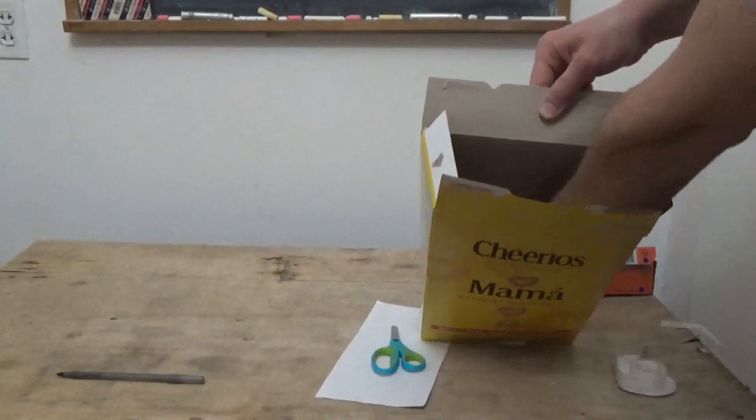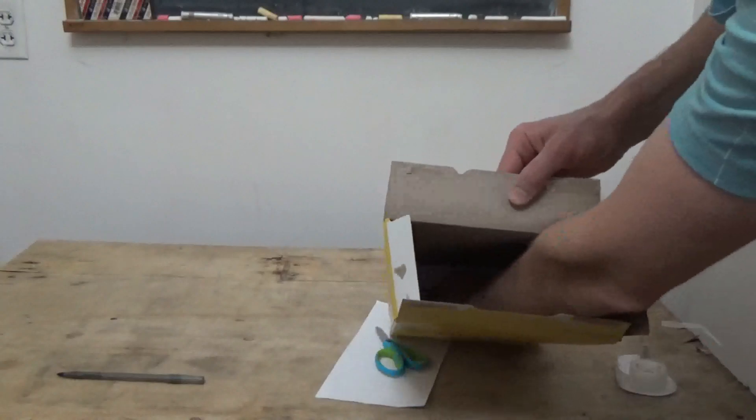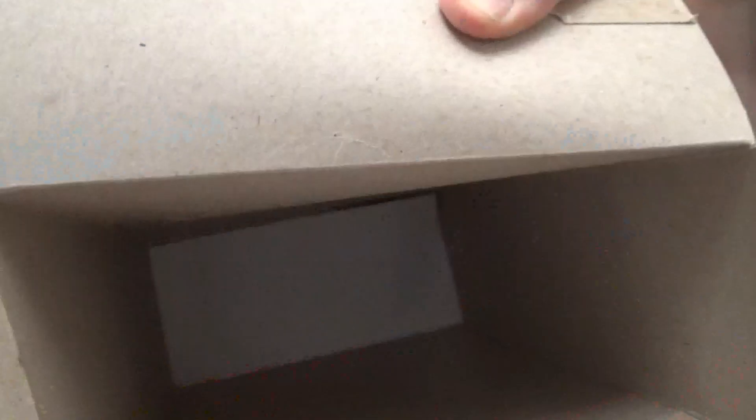We're going to take this white piece of paper and tape it down to the bottom of the box, pressing it in right at the bottom so that it's attached.